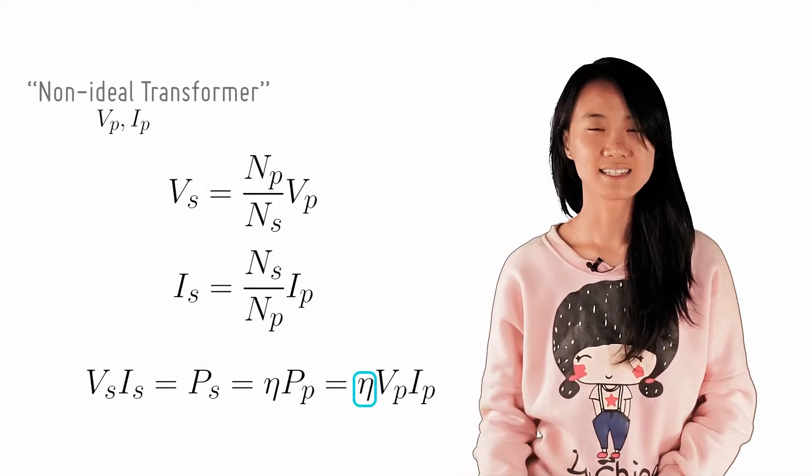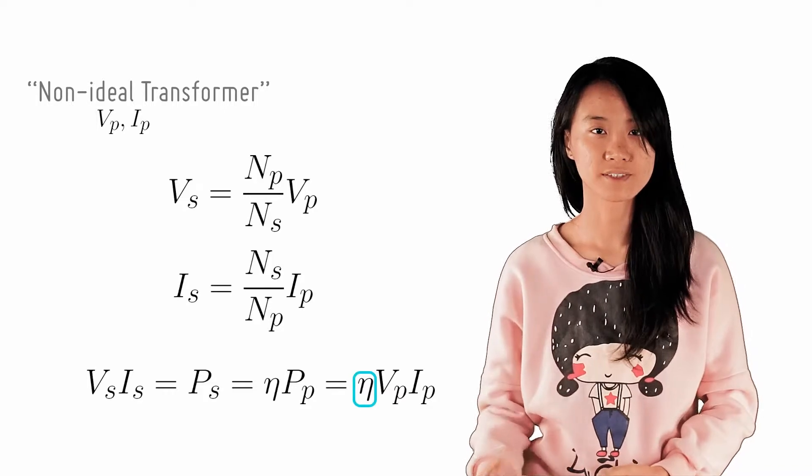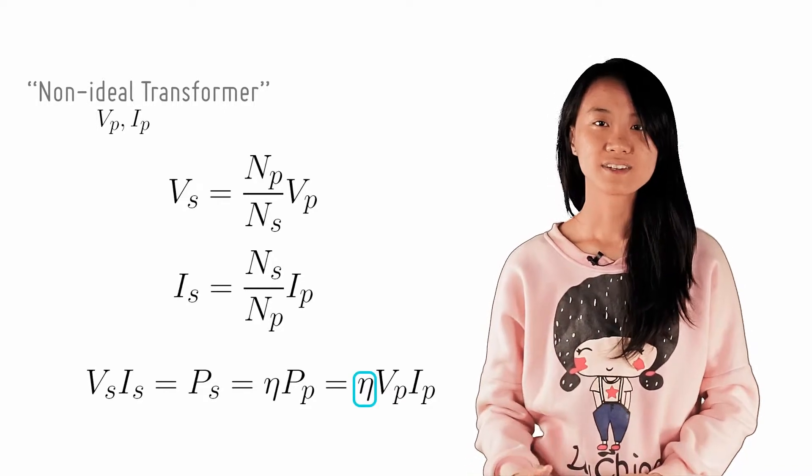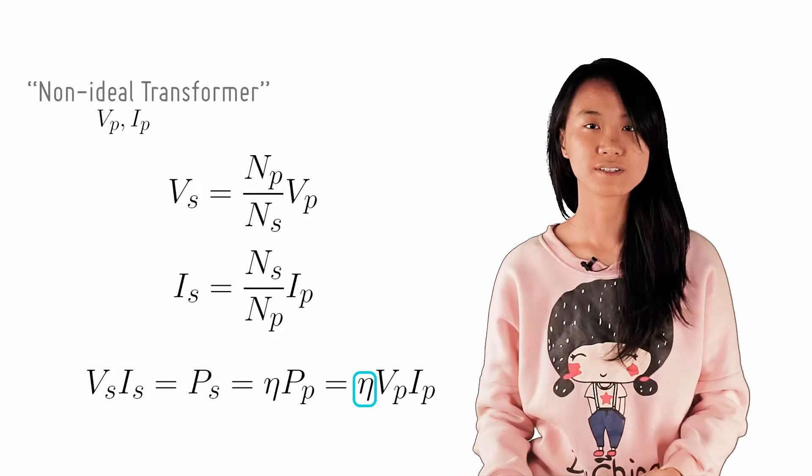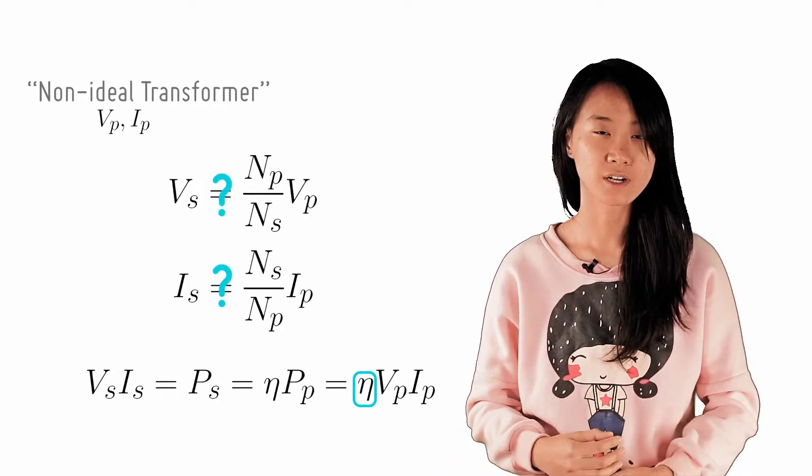Recall that vs and is are linearly scaled with respect to each other since they are related by a factor of the resistance. Therefore, since their product is a factor of eta, it is logical that each of vs and is will be multiplied by a factor of the square root of eta.